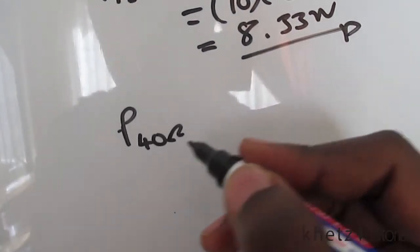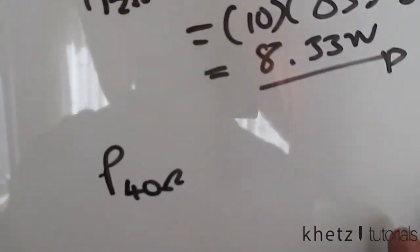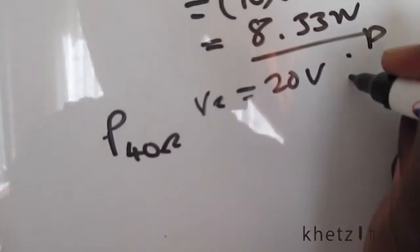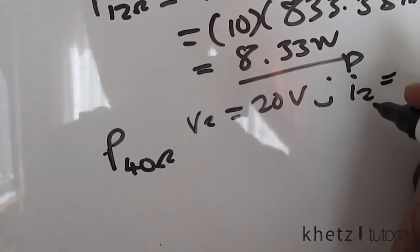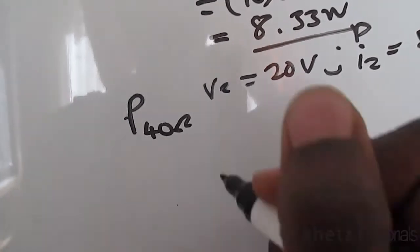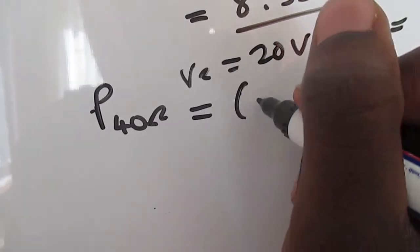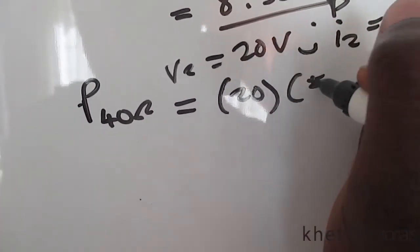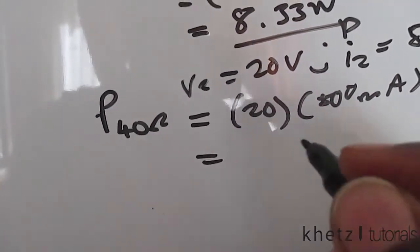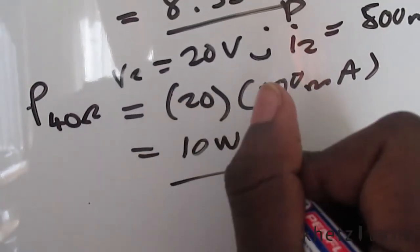For the 40 ohm resistor, associated with v2 equals 20 volts and i2 equals 500 milliamperes, the power dissipated equals v2 times i2, giving 10 watts. And that is how you solve this problem.